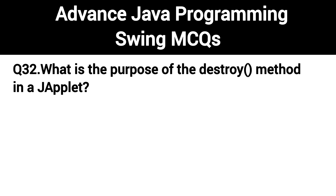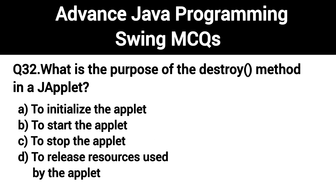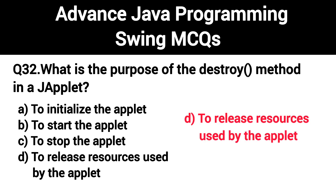Q32. What is the purpose of the destroy method in a JApplet? The right answer: To release resources used by the applet.